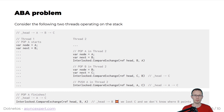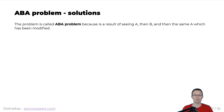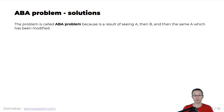This problem is called the ABA problem. The name comes from the following observation: we observe A, then we observe B, then we observe A again, but it means something else. It's also sometimes called the ABA' problem, because the second version of A — even if the reference is equal to the first one — means something else. In our case, the result was that the following node after A was C, not B any longer. That's the ABA problem.